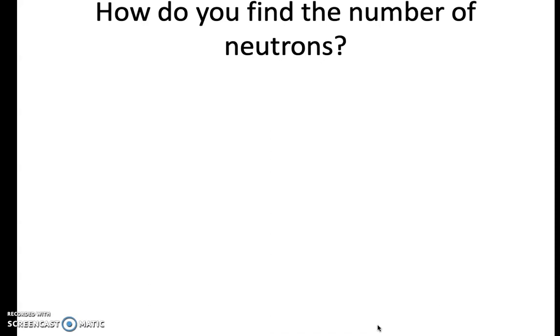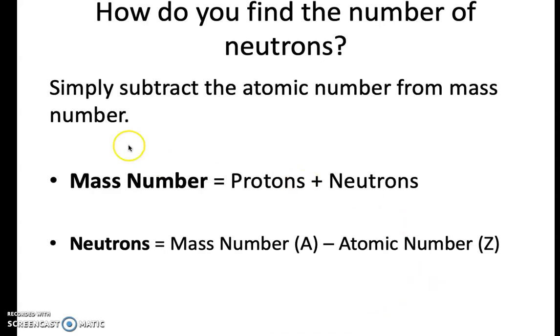Now, we know how to find the number of protons. We know how to find the number of electrons. You look at the atomic number. How do you find the number of neutrons? Well, it's very simple. You're going to simply subtract the atomic number from the mass number. Why? Well, the mass number is the number of protons and neutrons. If you subtract the atomic number from mass number, that basically cancel out the protons. So to calculate the neutrons, it's mass number, which is the A, minus the atomic number, Z.